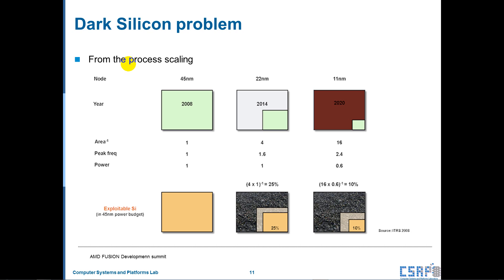As you can see this, while we increase the process, the dark region will be grown up. That's why we stuck in technology limitation.